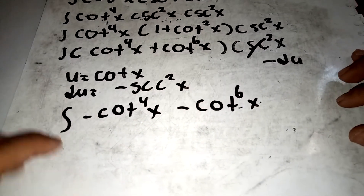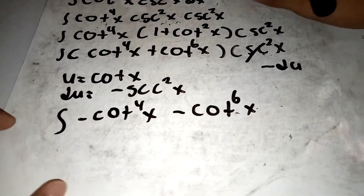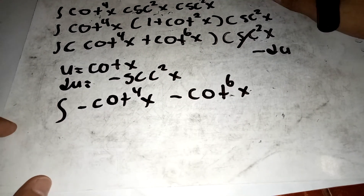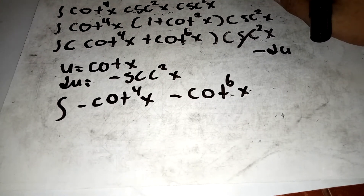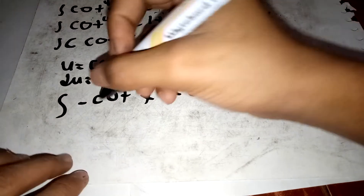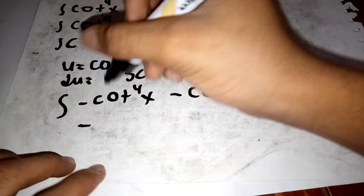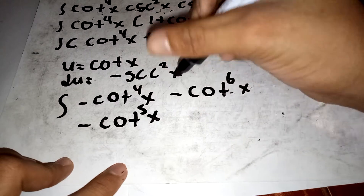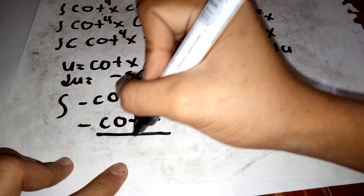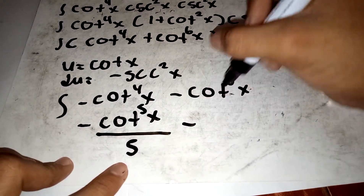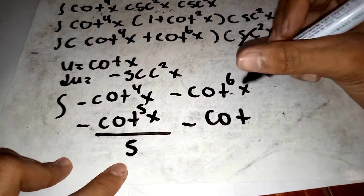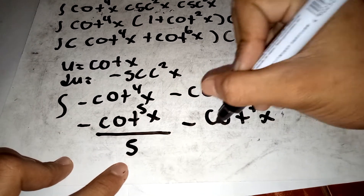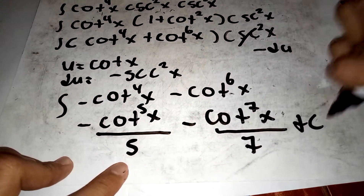Using the power rule or power formula, we can integrate to get positive cotangent to the fifth x over 5, and negative cotangent to the sixth x gives negative cotangent to the seventh x over 7, plus C.